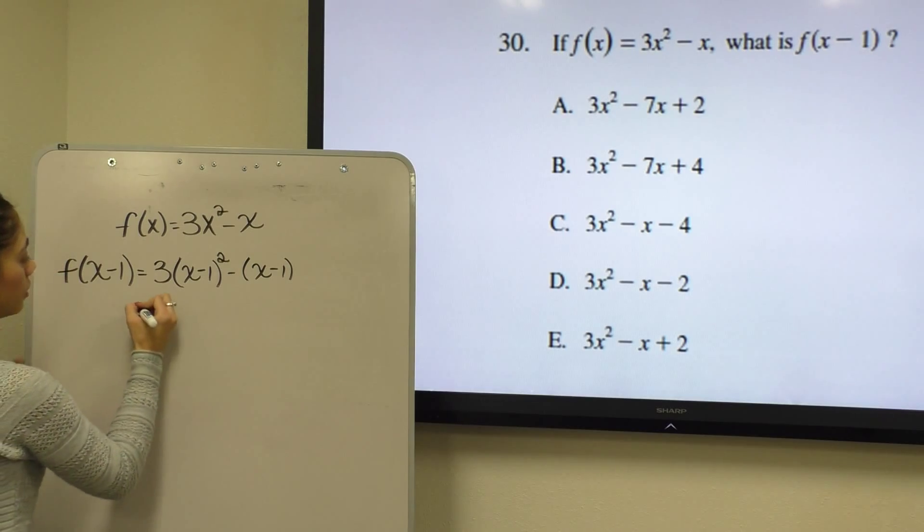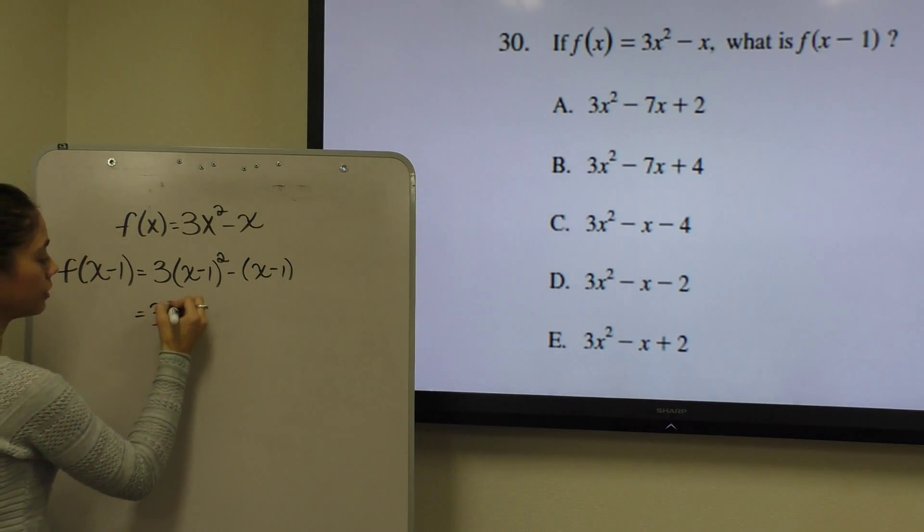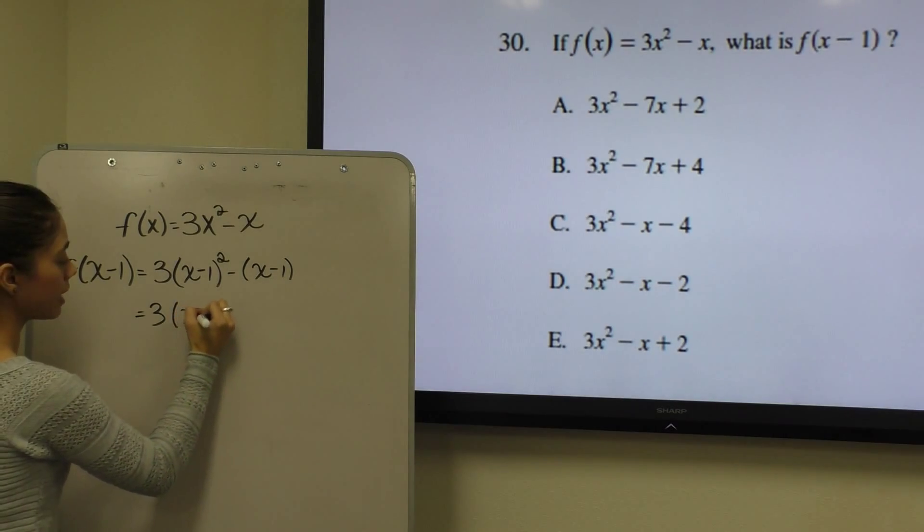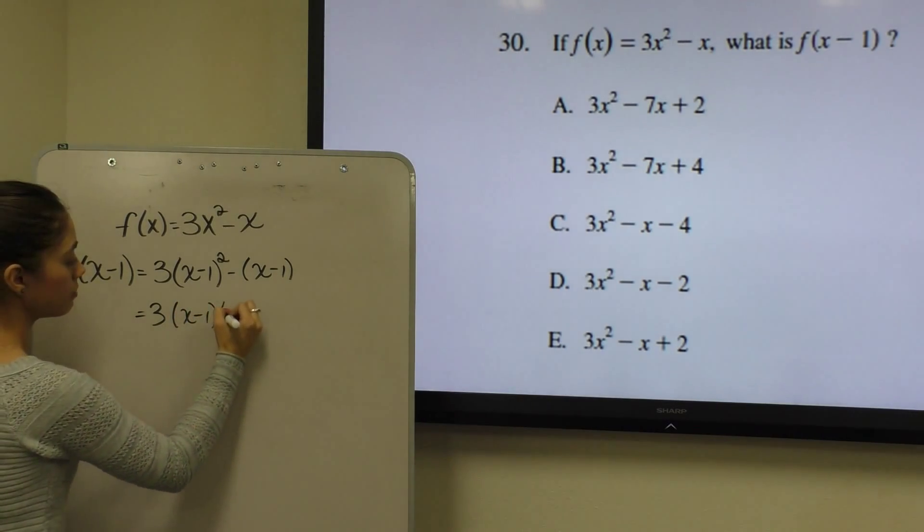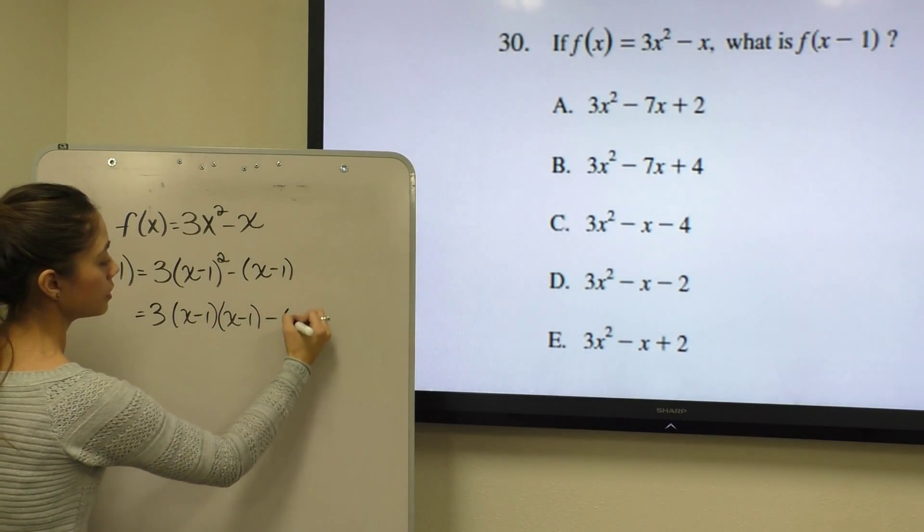And then we would just carry out our normal operations. So since this is being squared, I'm going to multiply x minus 1 by x minus 1. And don't forget the rest of your equation.